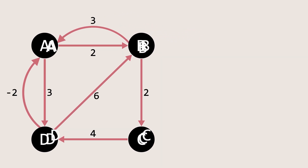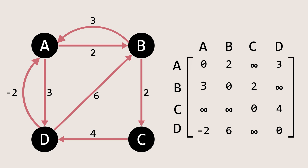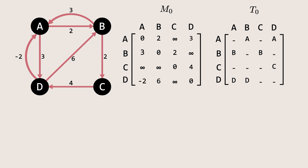This algorithm operates on the adjacency matrix of the graph, where each entry represents the weight of the edge between two nodes. If no direct edge exists, the entry is set to infinity. We name this matrix M0, and we also initialize another matrix T0, known as the predecessor matrix. This matrix keeps track of the previous nodes in the shortest paths and will be used to construct the shortest path between any two nodes. The core idea is to systematically visit each node and check if it can act as an intermediate point to provide a shorter path between any two nodes. If such a path exists, we update the matrices accordingly. This process is repeated for all nodes in the graph.